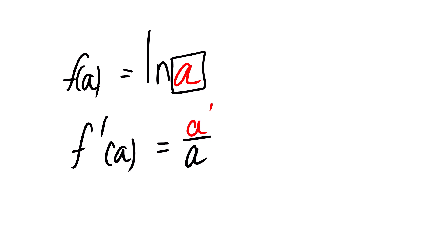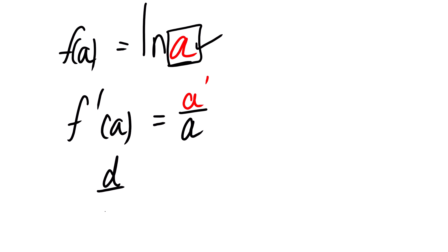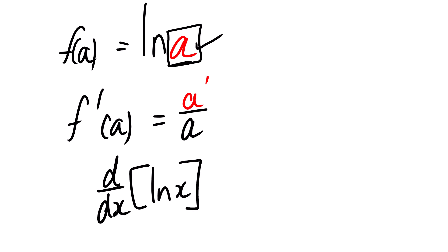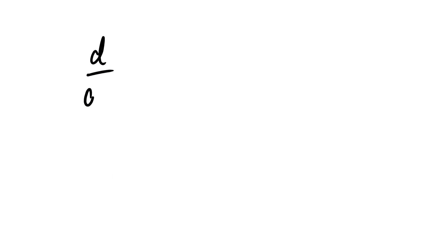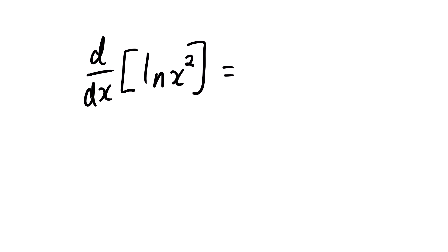Whatever you see inside, you take the derivative of it over that same value. For example, the derivative of ln x: we differentiate x, which gives 1, over x — so the answer is 1 over x. The derivative of ln x² equals the derivative of x², which is 2x, divided by x². One x cancels, giving a final answer of 2 over x.